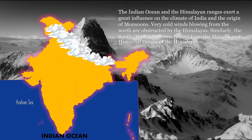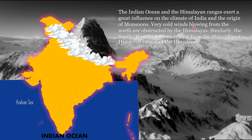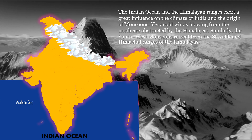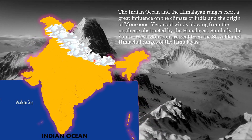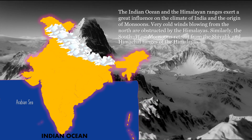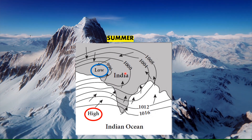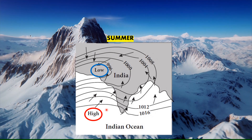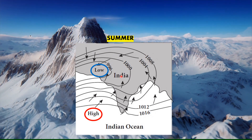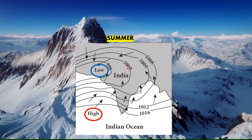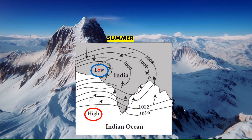The Indian Ocean and the Himalayan ranges exert a great influence on the climate of India and the origin of monsoons. Very cold winds from the north are obstructed by the Himalayas. In summer, land gets heated faster while water gets heated slowly. As a result, a low pressure area is created on mainland India and high pressure is created in the Indian Ocean, causing winds to blow from the high pressure zone to the low pressure zone.